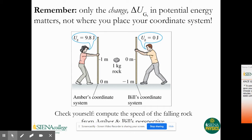Only the change in gravitational potential energy, delta UG, is important — it doesn't matter where you place your coordinate system. In this example, Amber's rock starts at one meter and finishes at zero meters, giving UG of 9.8 joules. Bill's rock starts at zero meters and ends at negative one meter, so his starting potential energy is zero while Amber's is 9.8. We can verify it doesn't matter by computing the speed the rock reaches at the bottom from both perspectives.